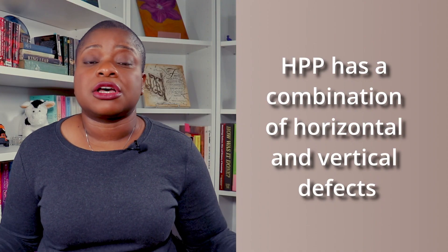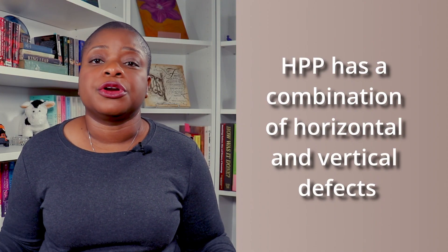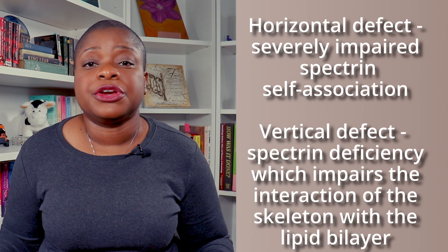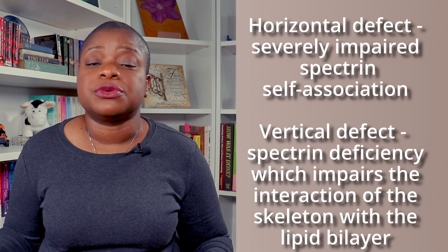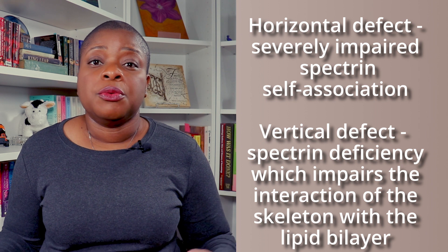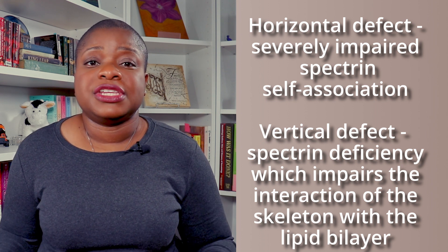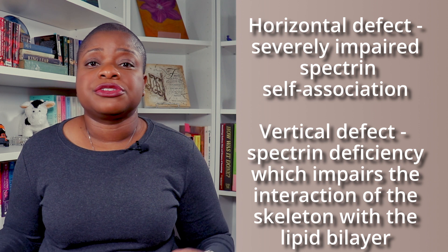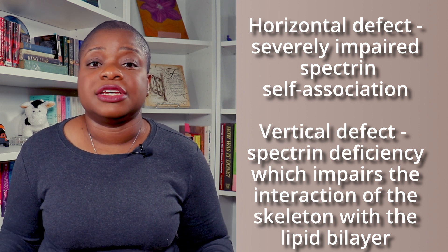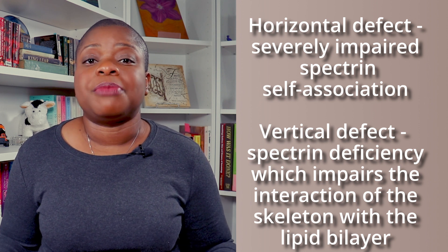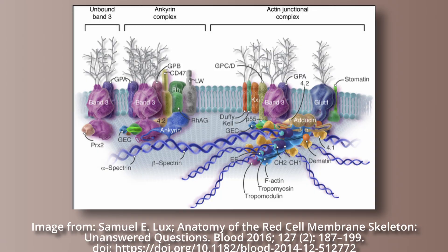HPP has a combination of horizontal and vertical red cell membrane skeleton defects. It has severely impaired spectrin self-association, which is the horizontal defect, and spectrin deficiency, which impairs the vertical interaction of the skeleton with the lipid bilayer of the membrane. SAO has a mutation of the band 3 protein.